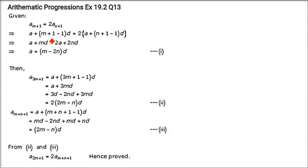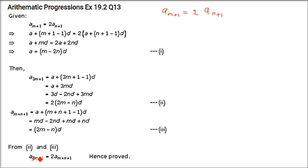If the (m+1)th term of an AP is twice the (n+1)th term, prove that the (3m+1)th term is twice that of the (m+n+1)th term.